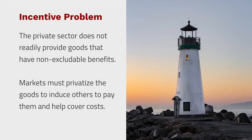If it's new to you, the way to understand it is that it's an incentive problem. The problem is that the private sector does not really easily provide things like lighthouses or national defense — these class of goods that have non-excludable benefits. Markets need to control the distribution of benefits in order to induce people to pay for them. So if you're producing something that everyone can enjoy, you have a really hard time convincing someone to pay you to help cover the cost.